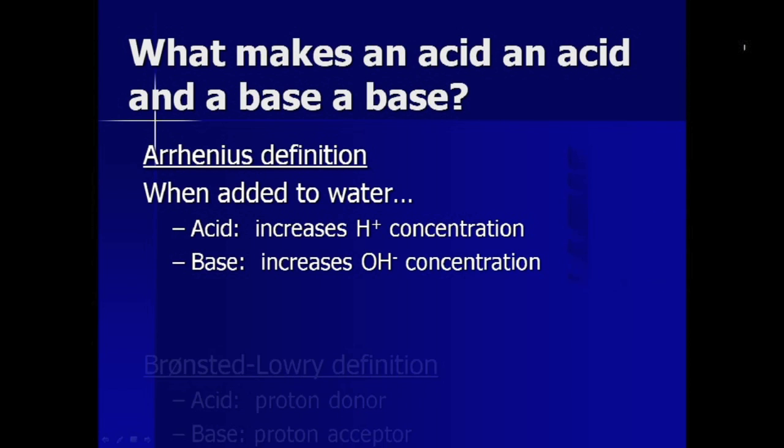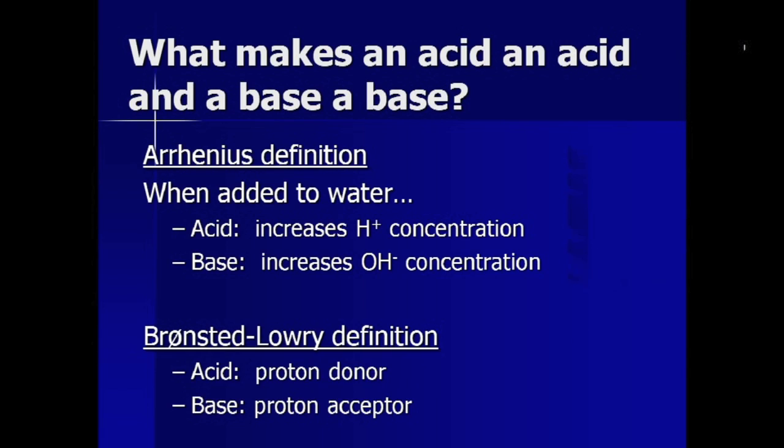So, then we welcome Bronsted and Lowry. The Bronsted-Lowry definition of an acid or base is a little broader than Arrhenius's. A Bronsted-Lowry acid is one that is a proton donor. What? Protons? Think about it for a moment. Strip away the electron from the H atom, and you are left with a proton.